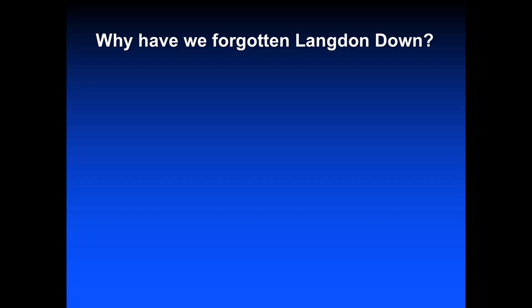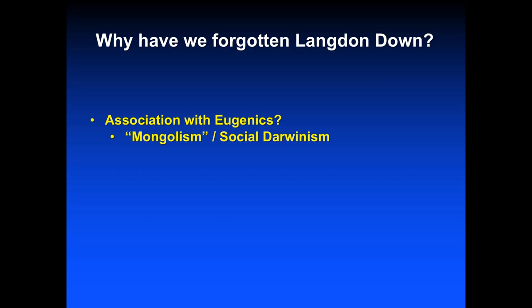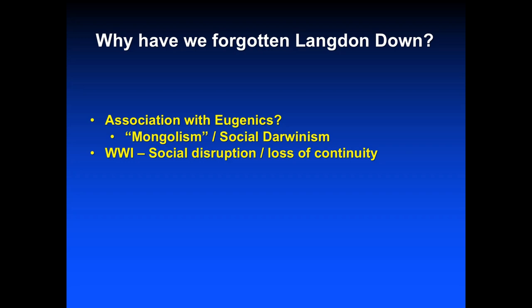So the question is: why have we forgotten or overlooked Langdon Down? One reason may be that he was tarred with the brush of eugenics and social Darwinism because he was the one who offered the theory of Mongoloid idiocy. A bigger reason may lie in the fact that World War I, resulting in millions of deaths in Europe, represented a tremendous disruption in social and scientific continuity. He didn't give his autism description a name. And perhaps most of all, he was simply ahead of his time.